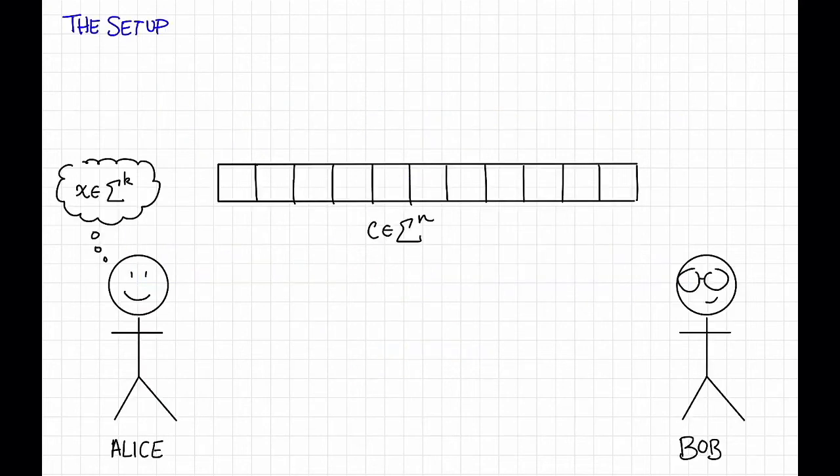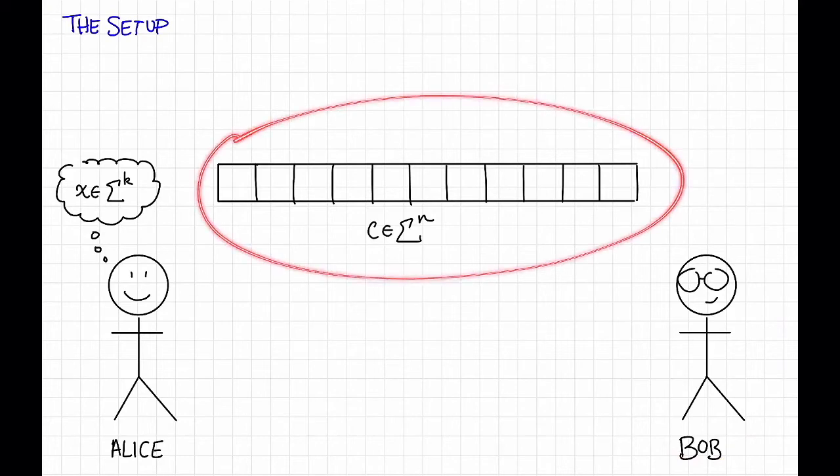Here's the basic setup for locally correctable codes. As usual, we have a sender, Alice, who has a message x in sigma to the k that she wants to send to a receiver, Bob. So what she does is she's going to encode her message x as some code word c in sigma to the n, and send it to Bob.